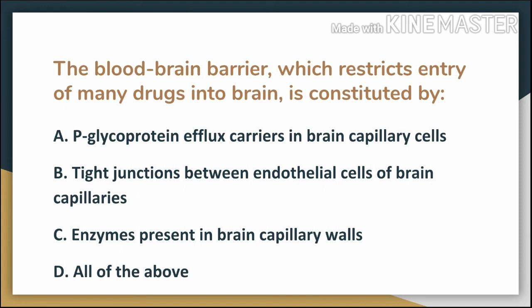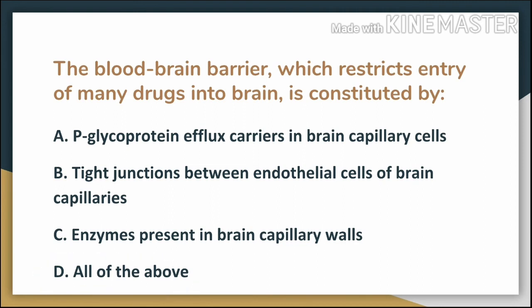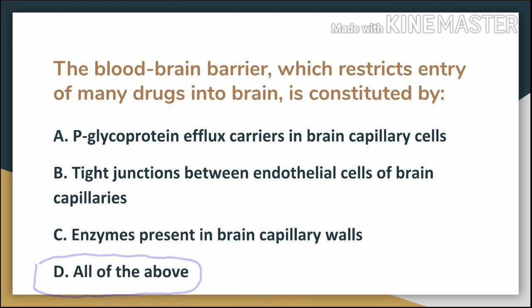The answer is B — all of the above. We need to review the properties of the blood-brain barrier. Option A is correct that there are P-glycoprotein efflux carriers in brain capillary cells. There are also tight junctions present, no paracellular space, and enzymes like monoamine oxidase and cholinesterase are present. All of these are properties of the BBB, so option B is correct.